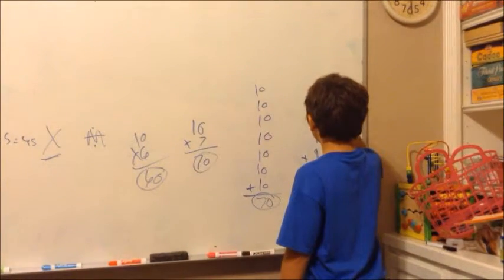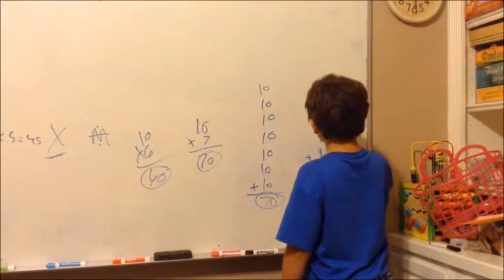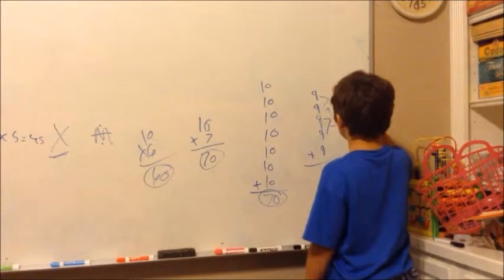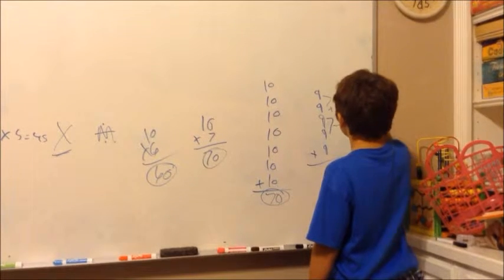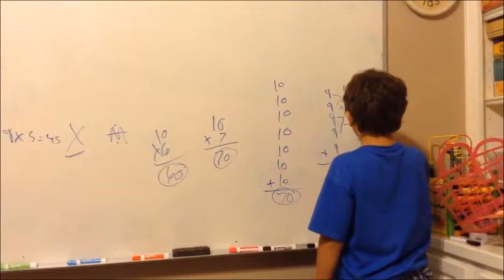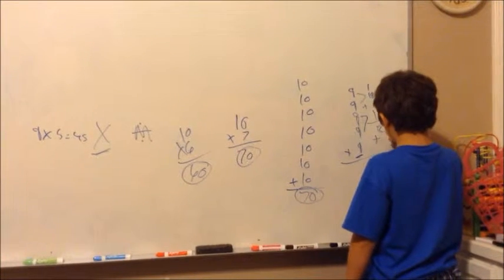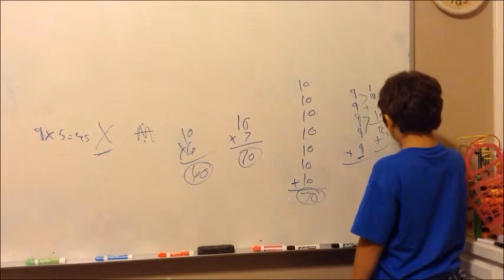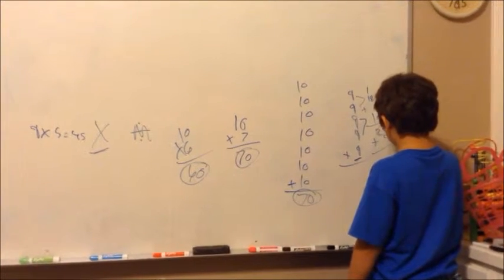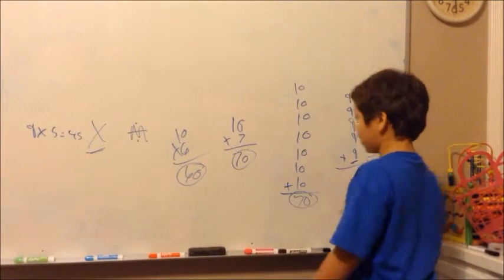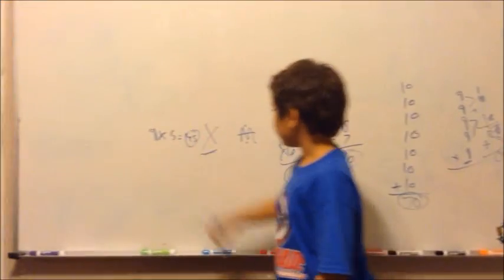So, nine plus nine equals eighteen. Nine, eighteen. Then we add nine more to get twenty-seven. Plus nine more gives us thirty-six. And plus nine again equals forty-five. So the answer is forty-five.